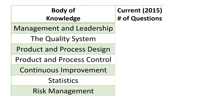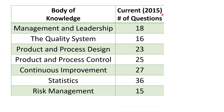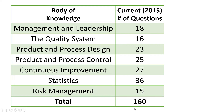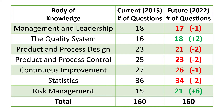Now I want to help you understand how these changes affect the big picture exam itself. Looking at the current 2015 Body of Knowledge, these are the number of questions from each pillar on the exam. There are seven pillars: management leadership, quality system, design, control, continuous improvement, statistics, and risk management. In total there are 160 questions on the exam. One of the things ASQ likes to change every time they revise the Body of Knowledge is how many questions come from each pillar.